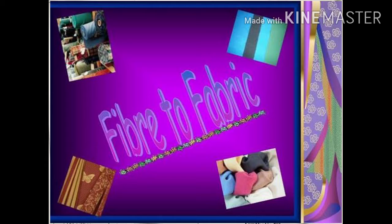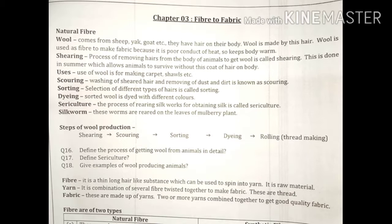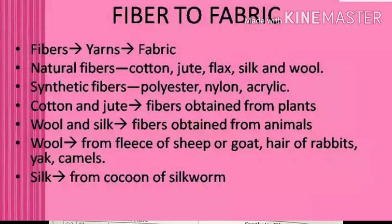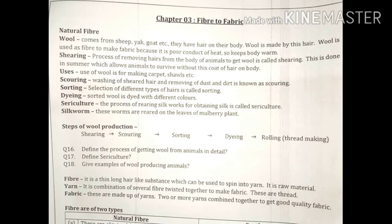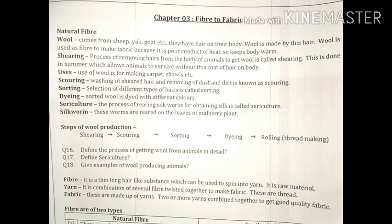Hello and good morning. Today we are starting another session of science — Chapter 3: Fibre to Fabric. In this chapter we will learn how fiber is converted into fabric. Fiber means the raw material obtained from plants or animals, and the conversion of this raw material into fabric means into a form usable by humans — the clothes. We will discuss the process starting from natural fiber.